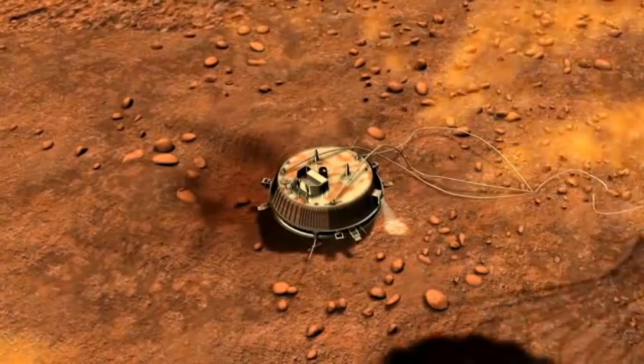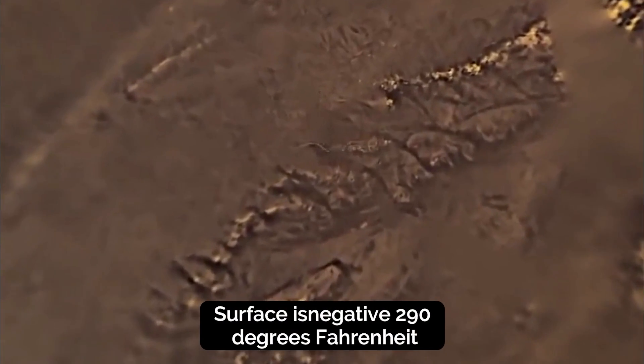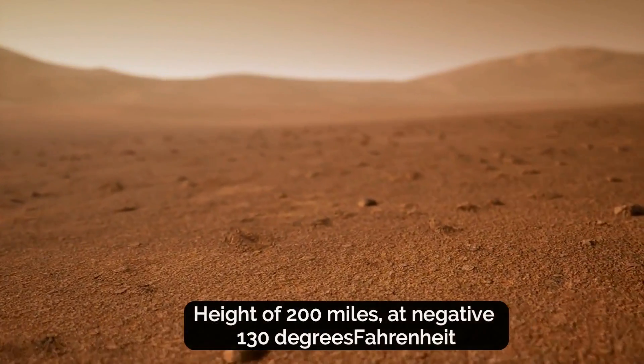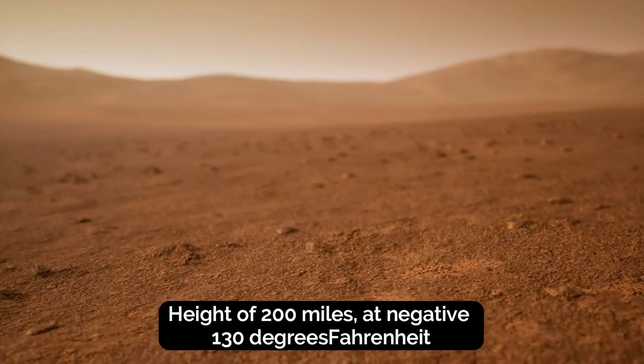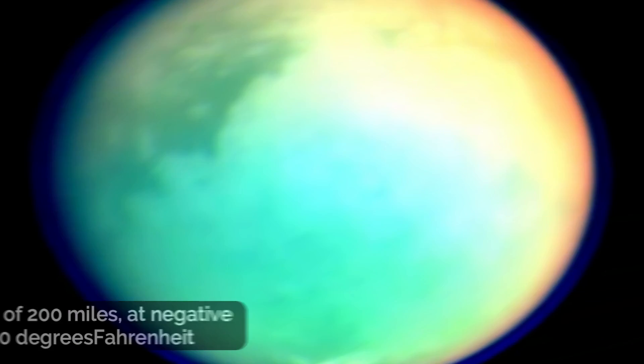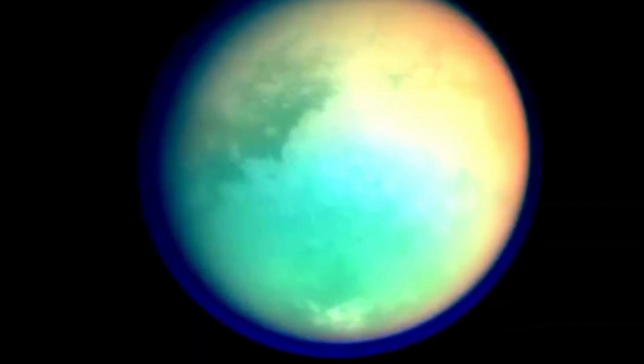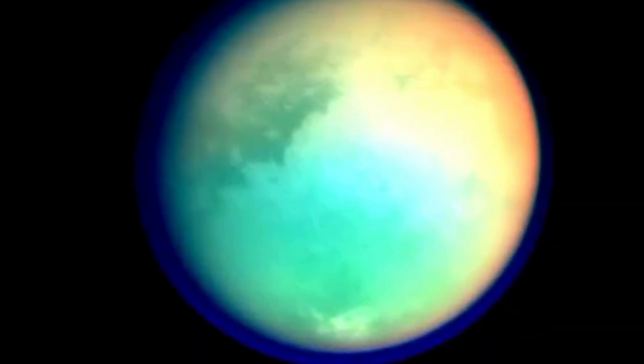Titan's atmosphere is clearly divided into several layers composed of different substances and varying in temperature. While the temperature on the surface is negative 290 degrees Fahrenheit, it's much warmer at a height of 200 miles at negative 130 degrees Fahrenheit. Titan's sky turns blue at the very top because it is mostly nitrogen and hydrogen.